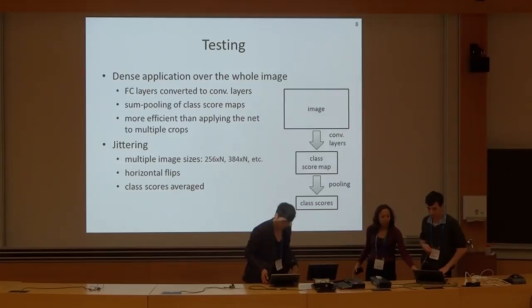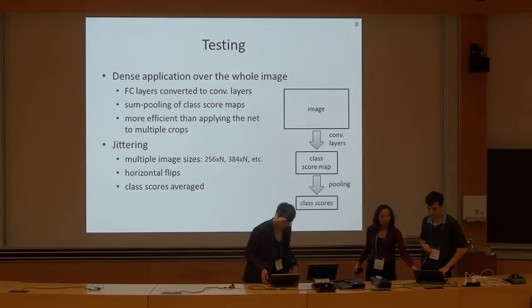Regarding the number of parameters: the number of parameters is about 130 to 140 million. In terms of the number of operations, I don't have the exact estimates at the moment. For our best configuration, I can look that up later.